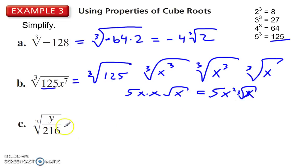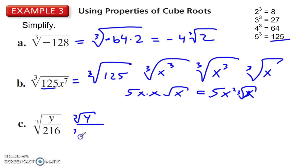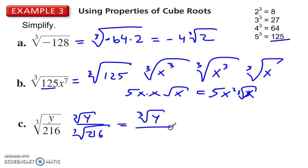Split this up into cube root of y over the cube root of 216. We're left with a cube root of y in the numerator. The cube root of 216 is 6.